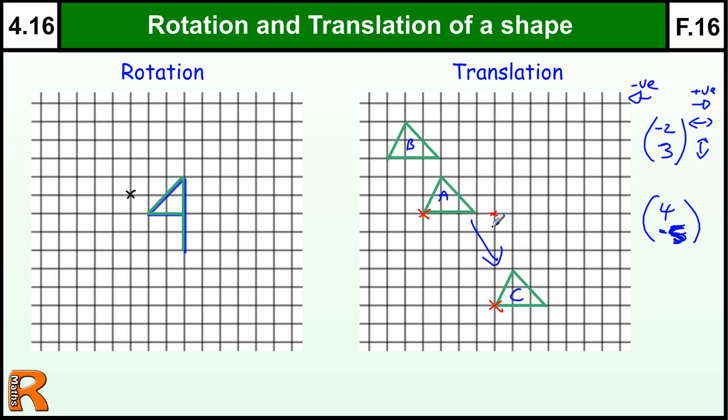So plus four, minus five. Always use the same point. Sometimes people just use the two closest points, so they go from here to here. And that would give you two minus three, and that would be totally wrong.